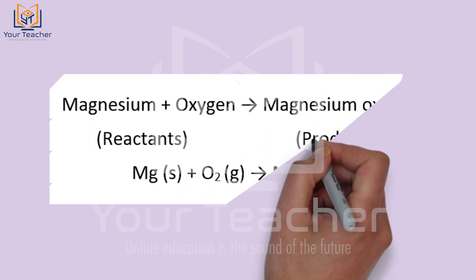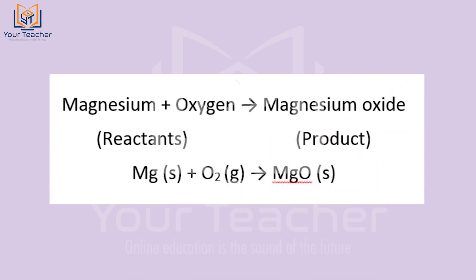What do we call a chemical reaction? For example, the reaction involving magnesium — magnesium reacts with oxygen to produce magnesium oxide. The product magnesium oxide is formed. This can first be written as a word equation in sentence form, which we then simplify.